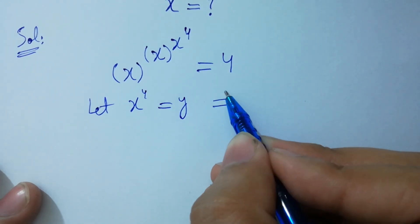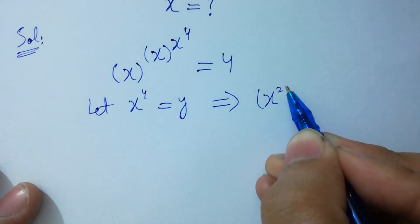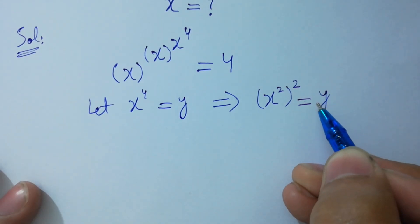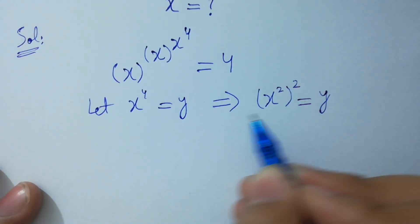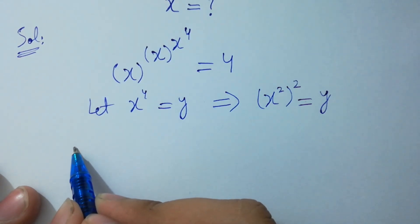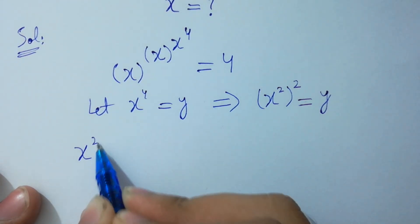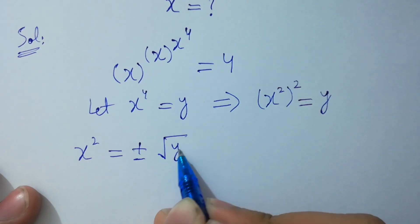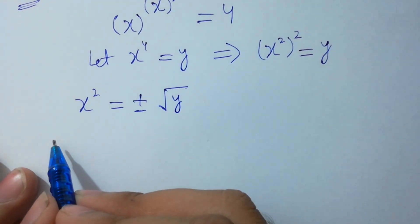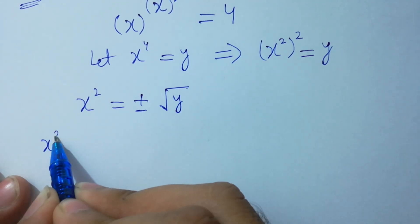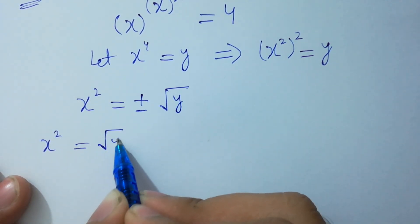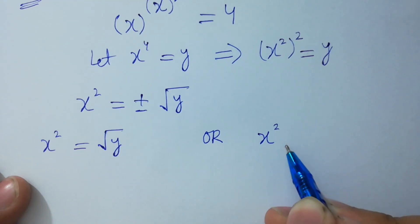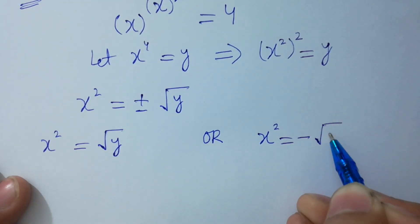This is the same as x squared to the whole power squared equal to y. Take square root on both sides: x squared equals plus or minus square root of y. Either x squared equals square root of y, or x squared equals minus square root of y.